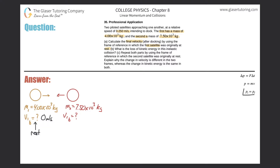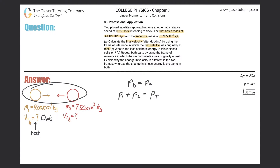Using conservation of momentum: momentum before the collision equals momentum after the collision. Before the collision there are two separate objects, so the momentum of the first object plus the momentum of the second object should equal the momentum of the consolidated object after they stick together.